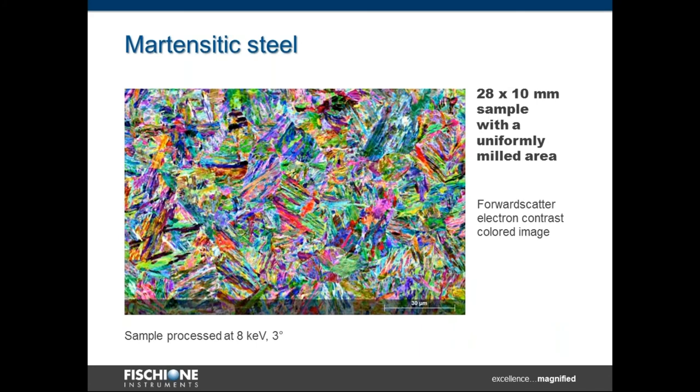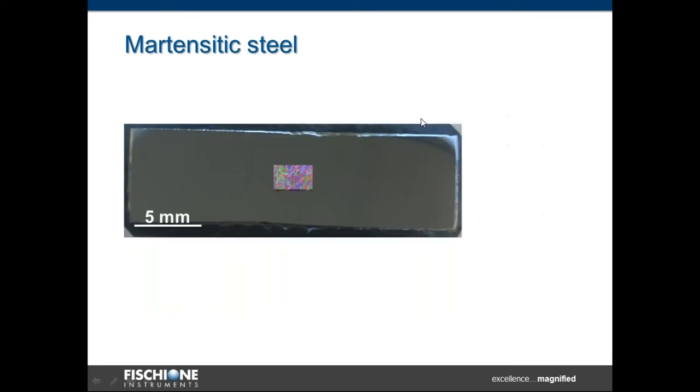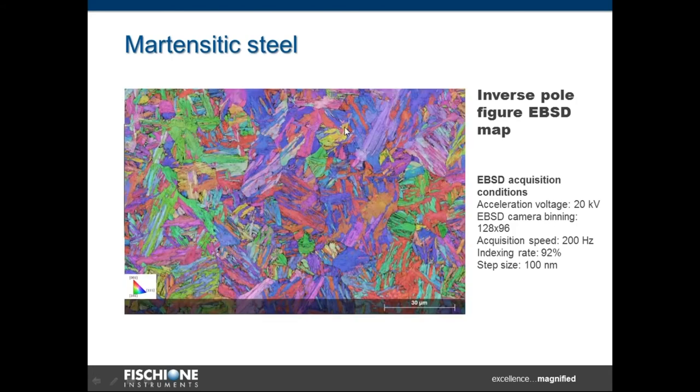Another example is martensitic steel. Here you see the sample dimension 28 by 10 millimeters of martensite. As you can see here, the image forward scatter electron contrast, which shows very sharp crystallographic contrast. You can see the lots of martensite. That also shows that the surface topography after all our ion milling is very shallow, because it's very important if you want to get such beautiful images like this one. Another slide shows the corresponding EBSD map was acquired at quite high speed and quite high binning. As you can see here, we got very nice and high quality EBSD data obtained from whole big area, almost 30 millimeters width sample.